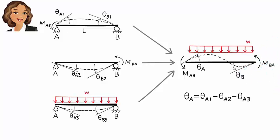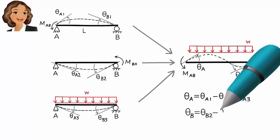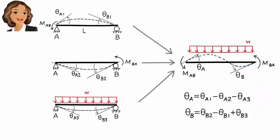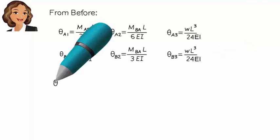Similarly, the rotation at B can be written as the sum of the three individual rotations at B. In the expanded form, these equations become the full superimposed expressions.